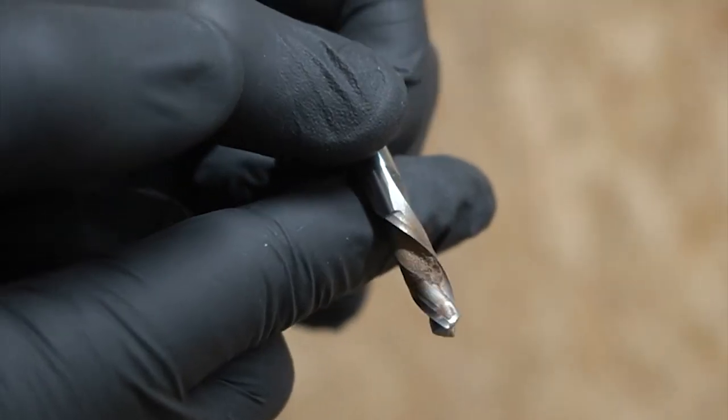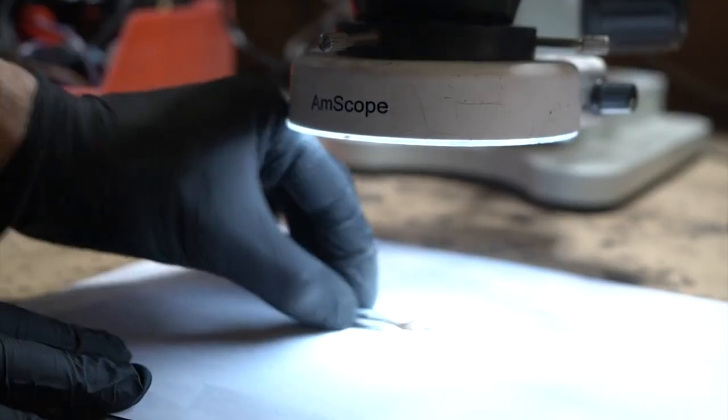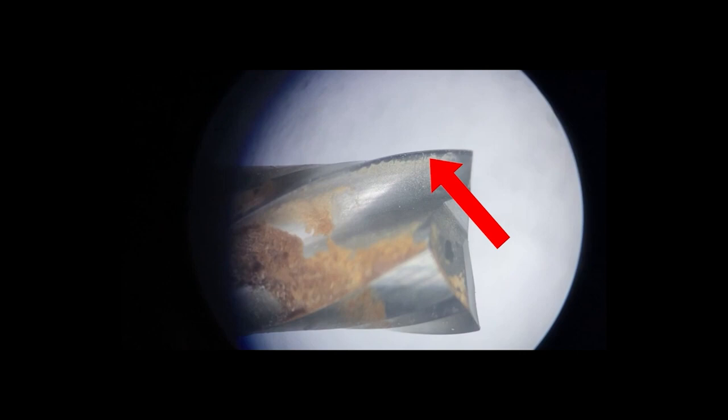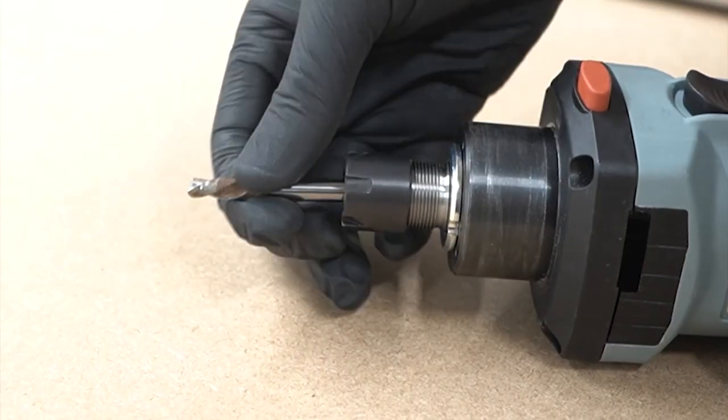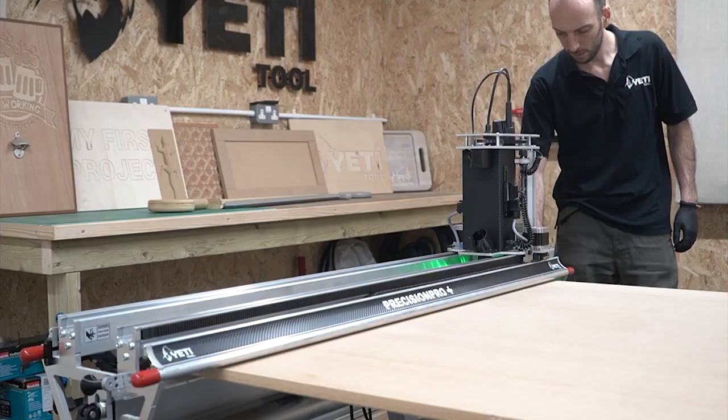For this cut I'll be using a 6mm down cutter. It's had some use so let's put it under the scope here and check it out. There's a bit of residue on the flutes and critically we can see some wear underneath the cutting edge there. So this is a real-world test for Yeti Pilot and all that remains is we need to get this into our SC2 spindle, put it onto our Pro Plus and let's get cutting.